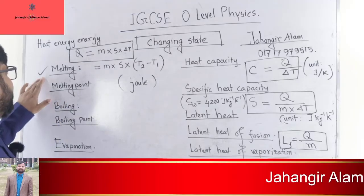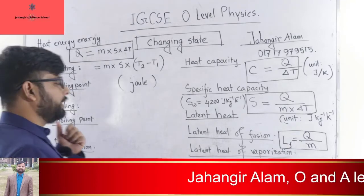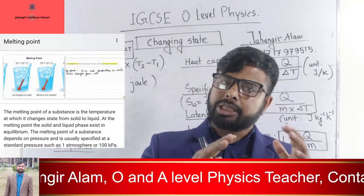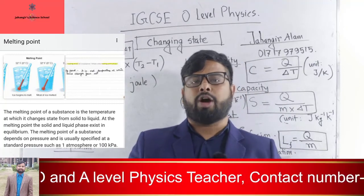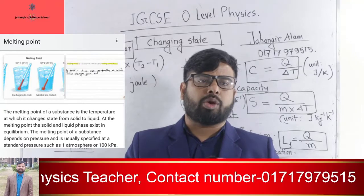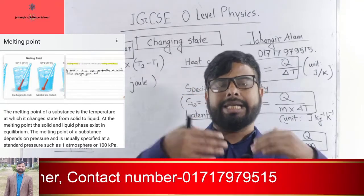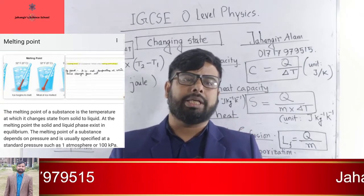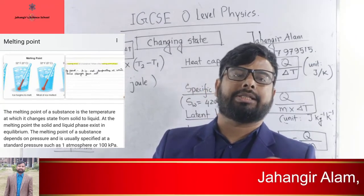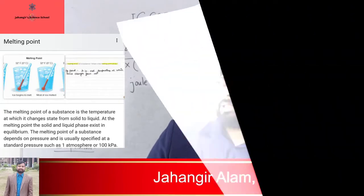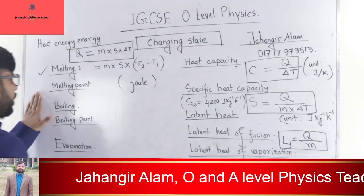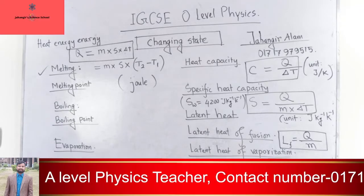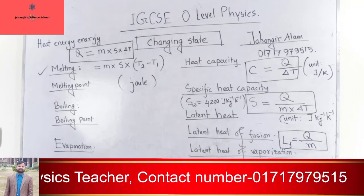The temperature at which a solid substance turns into liquid is known as the melting point. The melting point of a substance is the temperature at which it changes state from solid to liquid. At the melting point, the solid and liquid phase exist in equilibrium. The melting point depends on pressure and is usually specified at a standard pressure such as one atmosphere or 100 kPa.